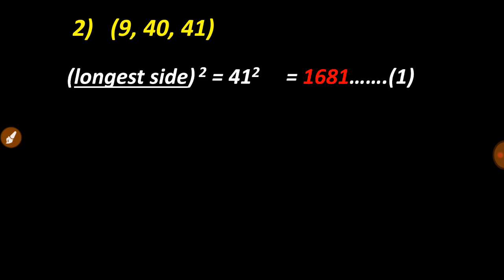Let's solve one more question. If sides given to us are 9, 40, and 41, then my first step includes square of longest side, that gives us 1681.